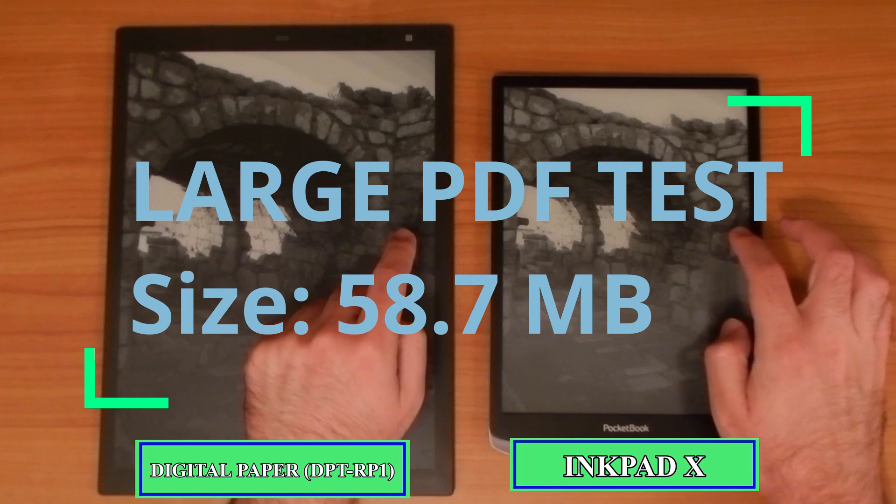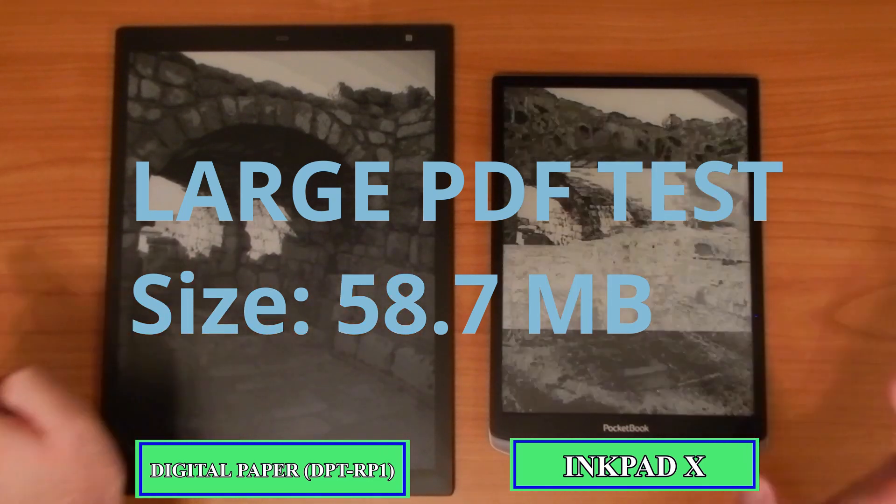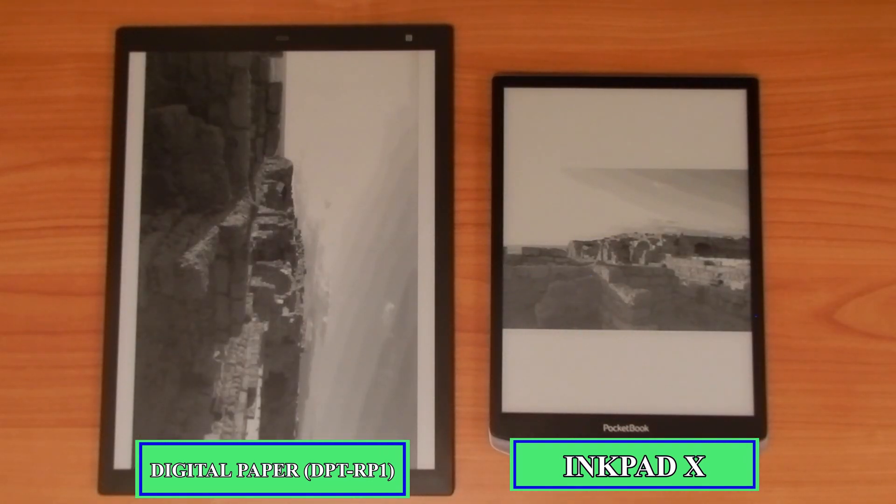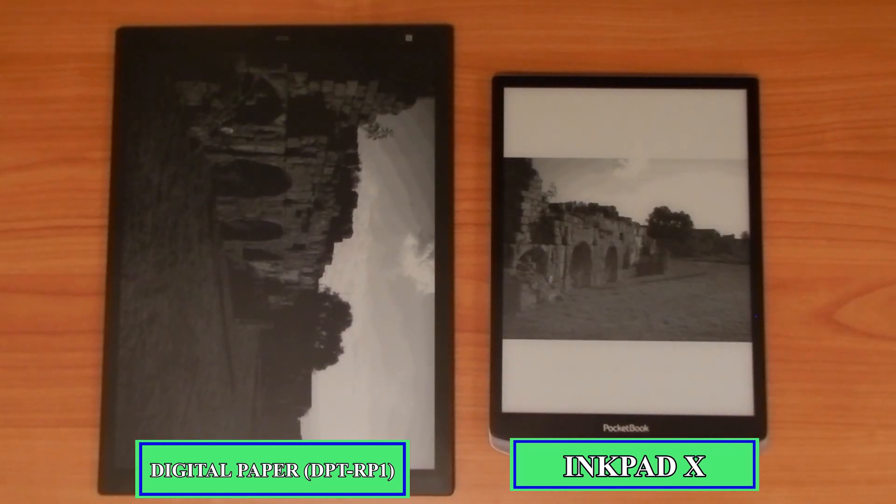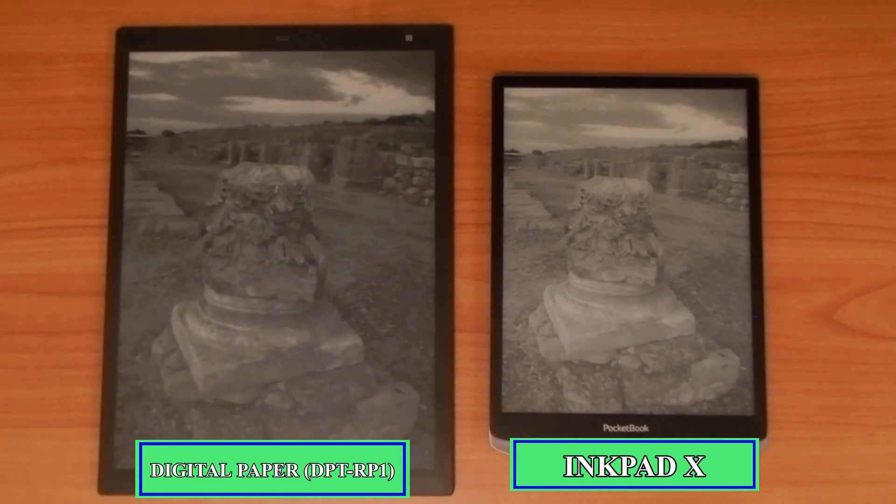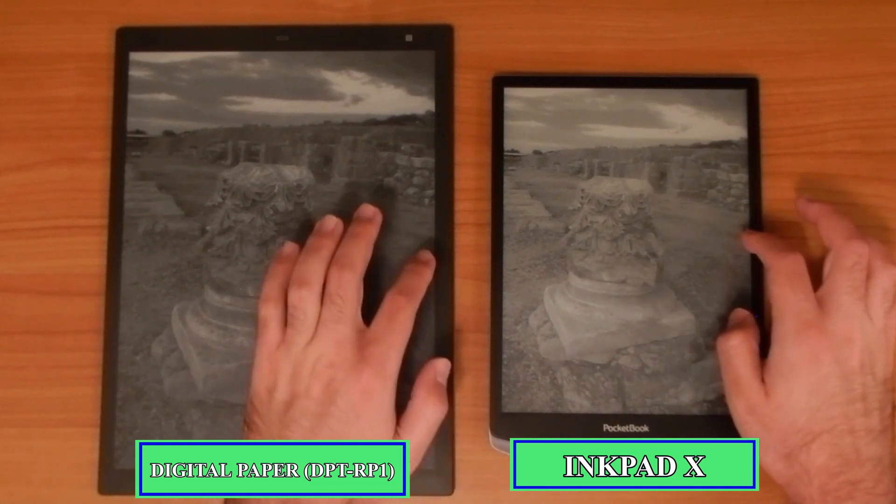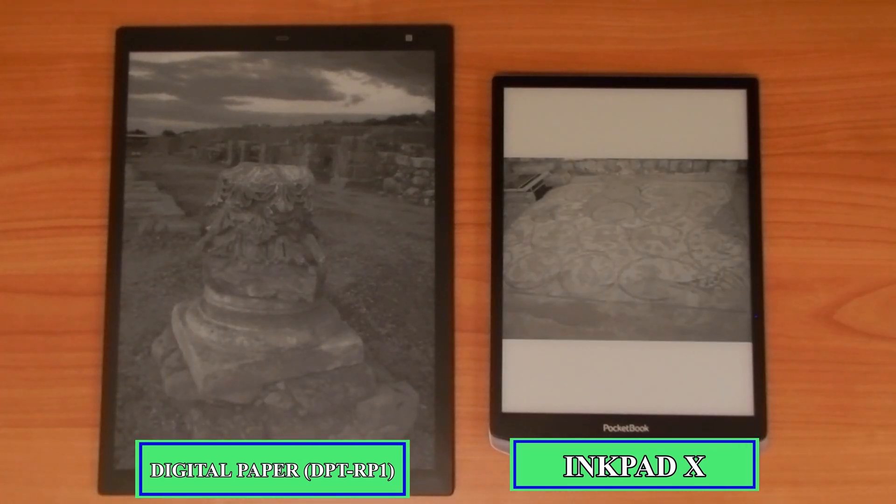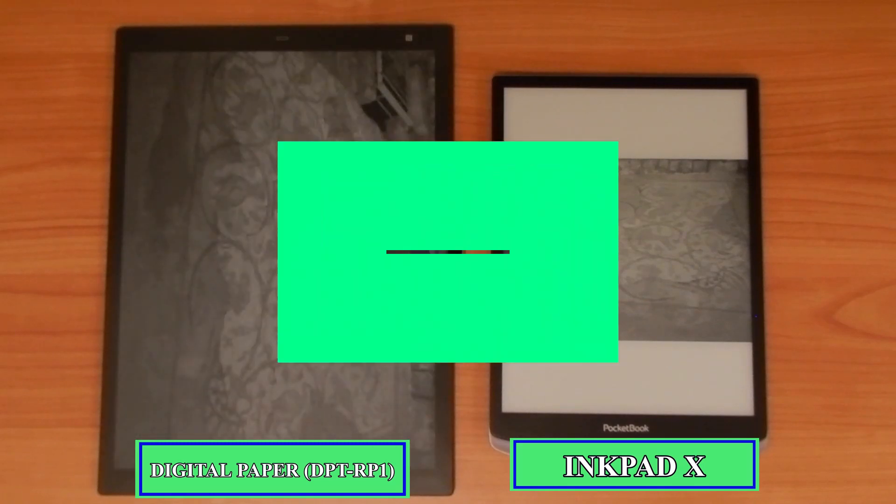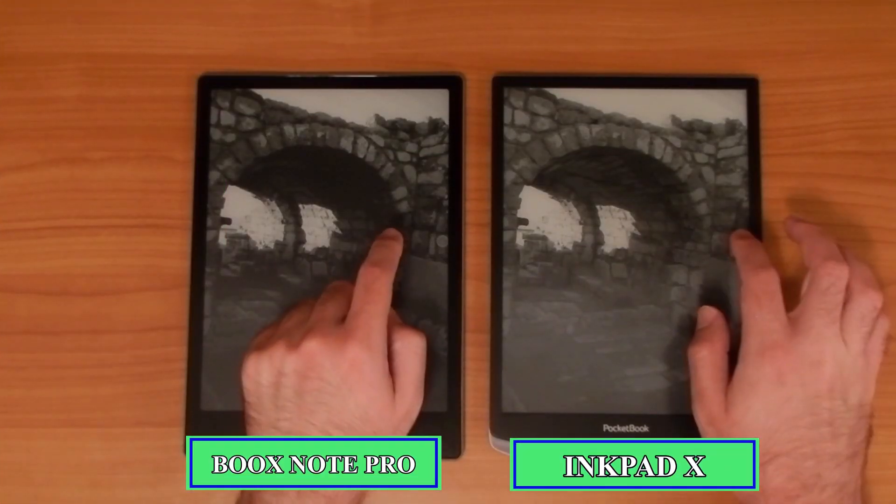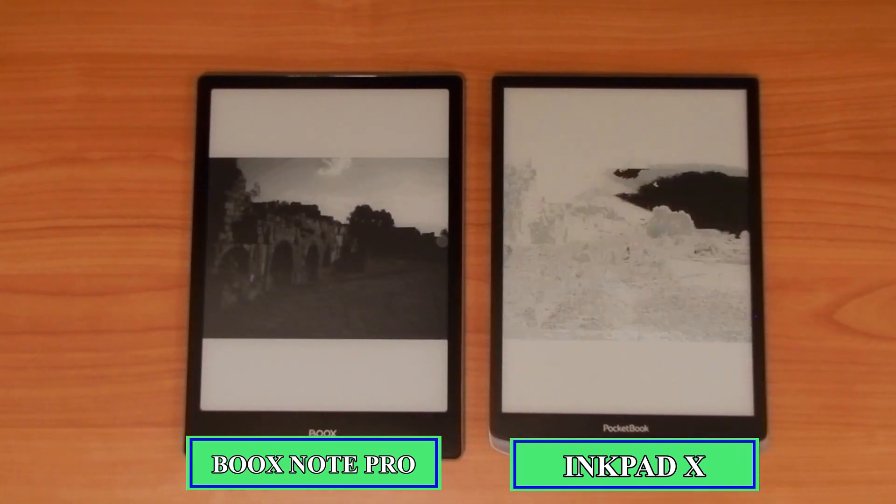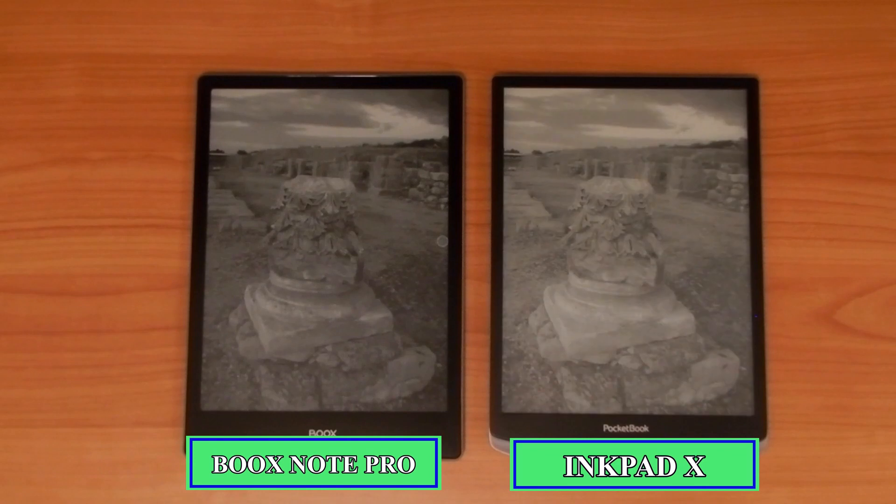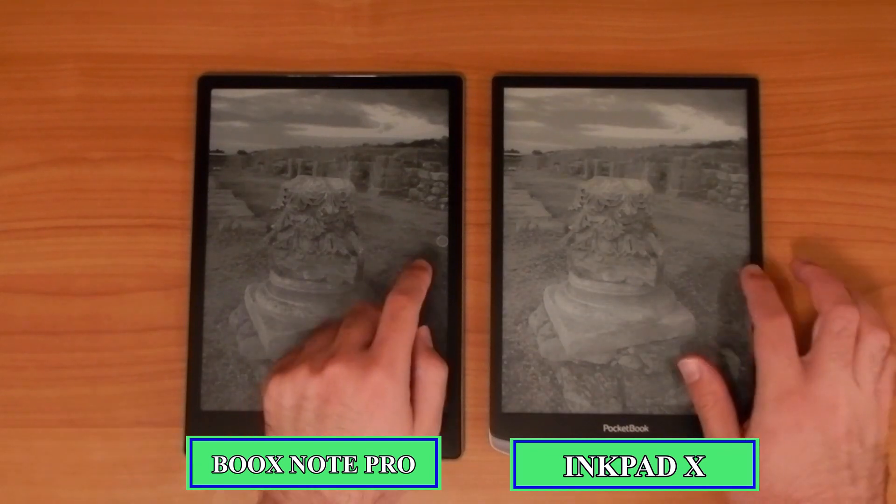So how well does the InkPad X handle larger or more image-intensive PDF documents? Actually, the answer is surprisingly well. Like with other tasks on the device, it can lag for no apparent reason, but usually it tends to preserve decently fast page turns, even on this test I did with a 58.7 megabyte image-heavy PDF. It's not the kind of consistent speed that you'll find on Sony's digital paper or the Onyx devices, but surprisingly it can hold up to those devices pretty well at times.